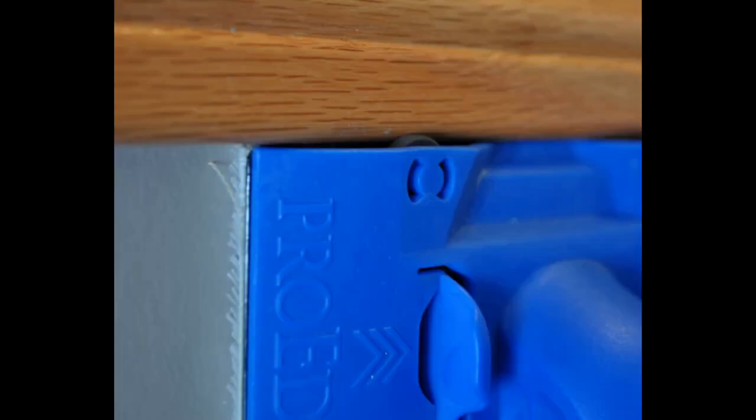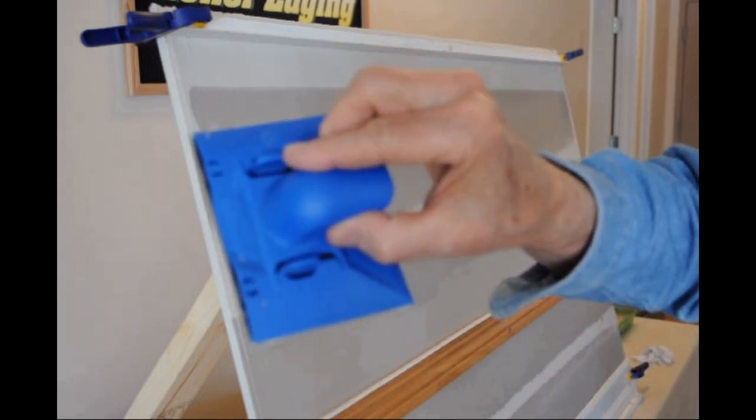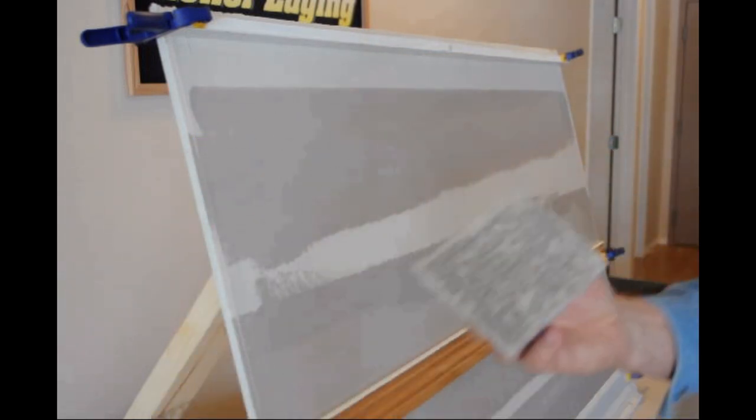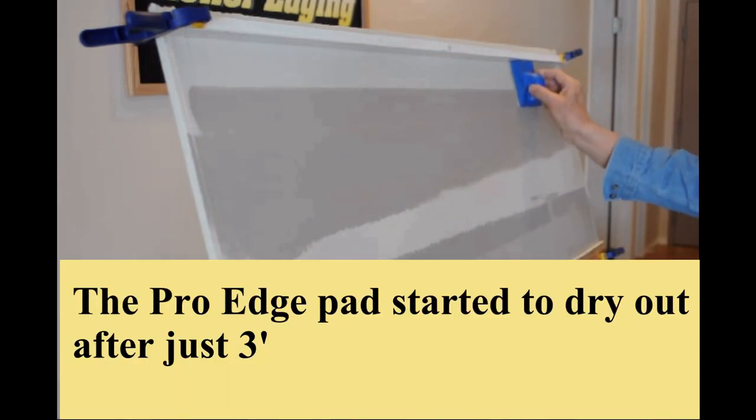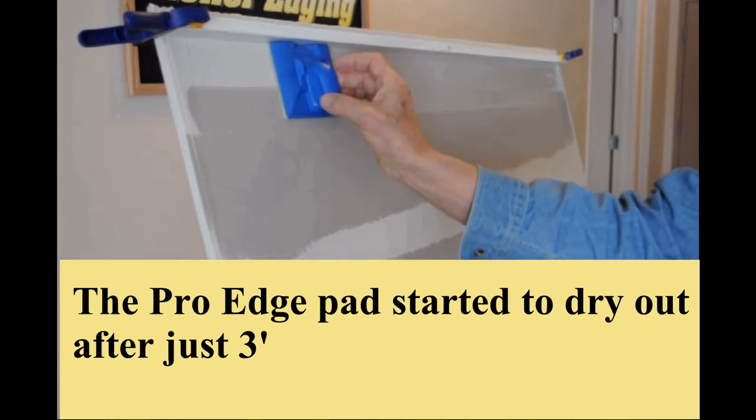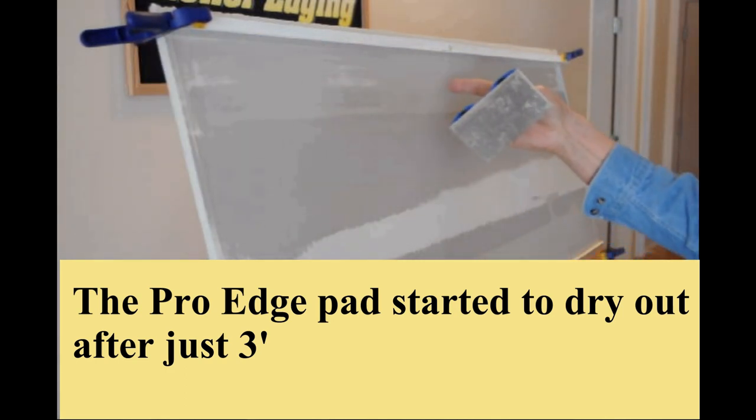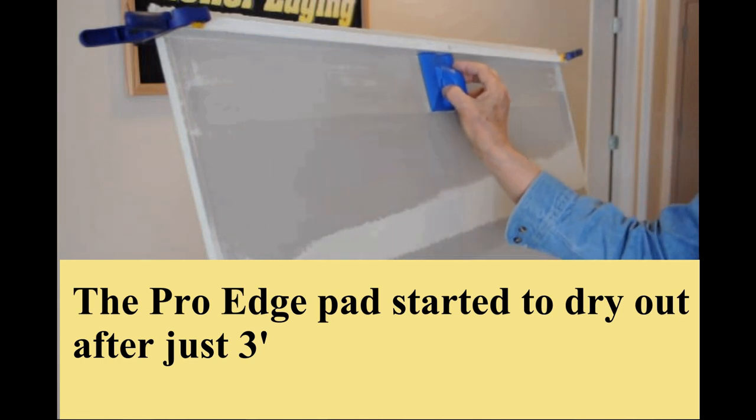First, we will look at pad edgers with wheels. They vary in price, quality, and performance. This tool appears to be an inferior design with poor quality pad material. The wheels on this product wouldn't contact the trim that was 3/8 inch wide. The pad started drying out after just three feet of edging.